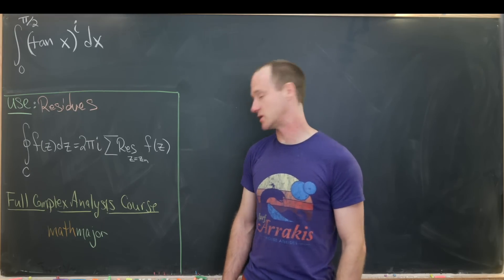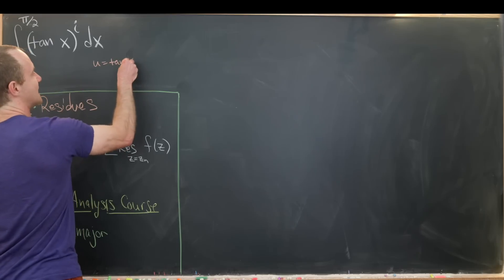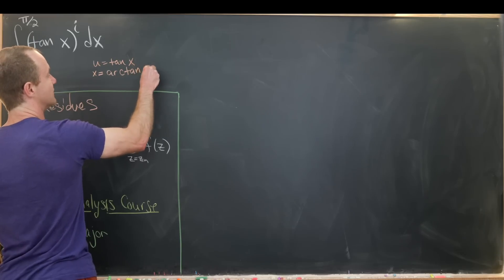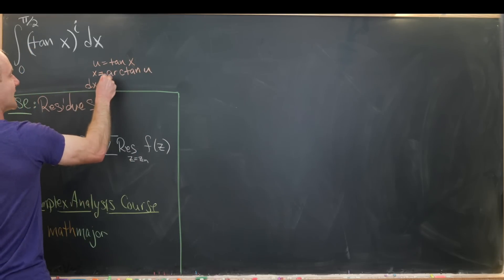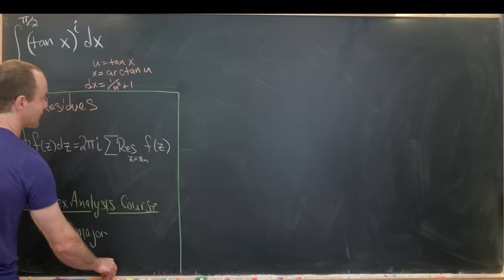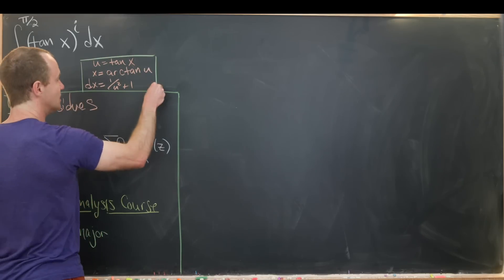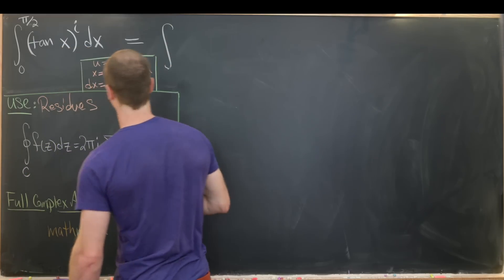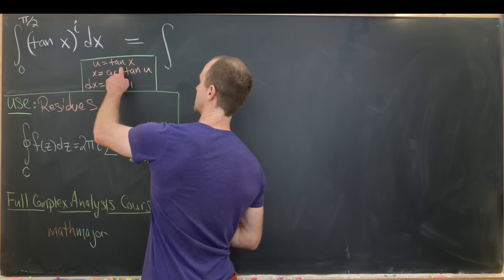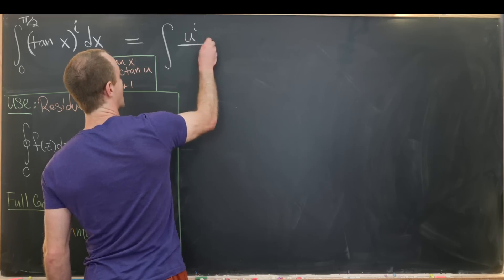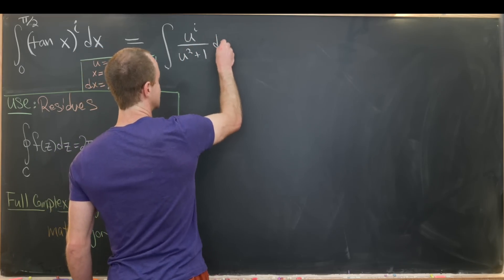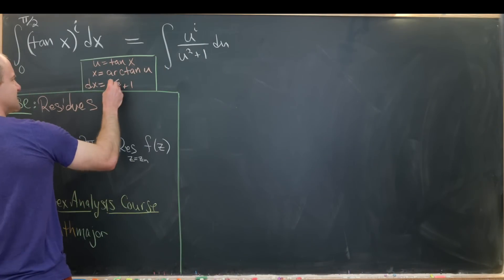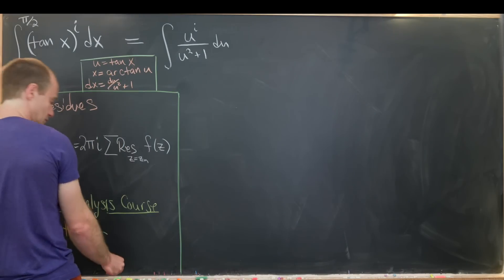Let's get started with a substitution. We set u equal to tan(x), which means x equals arctan(u). Taking the derivative, dx equals 1/(u² + 1) du. So we can rewrite the integral as the integral of u^i over (u² + 1) du, where the u² + 1 in the denominator came from the dx component.